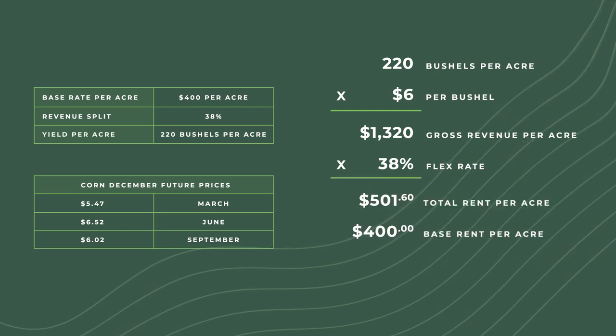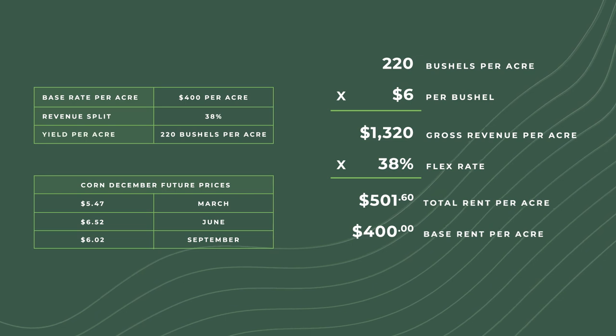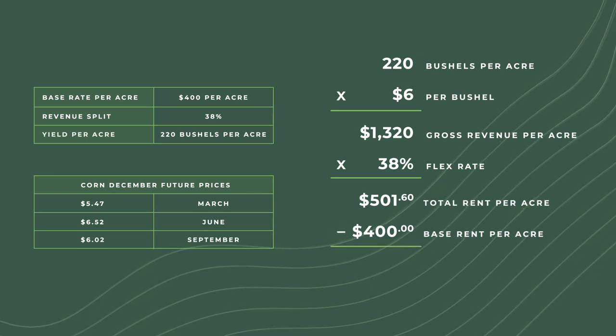Since the farmer has already paid a base rate of $400, the additional flex payment due at the end of the year would be $101.60, which would be returned to investors during their annual distribution.